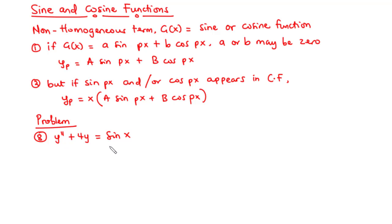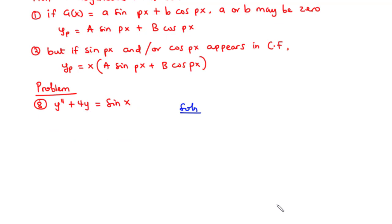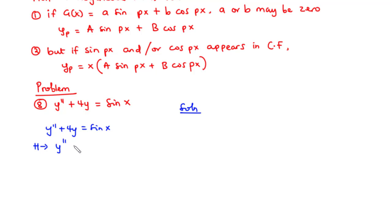Now we have this problem. Let's try to solve it together. We have the differential equation y'' + 4y = sin(x). Let's first treat this as a homogeneous differential equation so that the right-hand side equals 0, giving us y'' + 4y = 0.